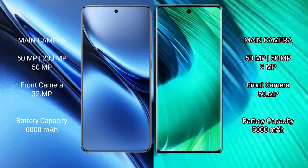Vivo X200 Pro has a rear triple camera setup: 50MP plus 200MP plus 50MP, and a 32MP front camera. Vivo V30 has a rear triple camera setup: 50MP plus 50MP plus 2MP, and a 50MP front camera. Vivo X200 Pro has a 6000mAh battery with 90W fast charging support. Vivo V30 has a 5000mAh battery with 80W fast charging support.